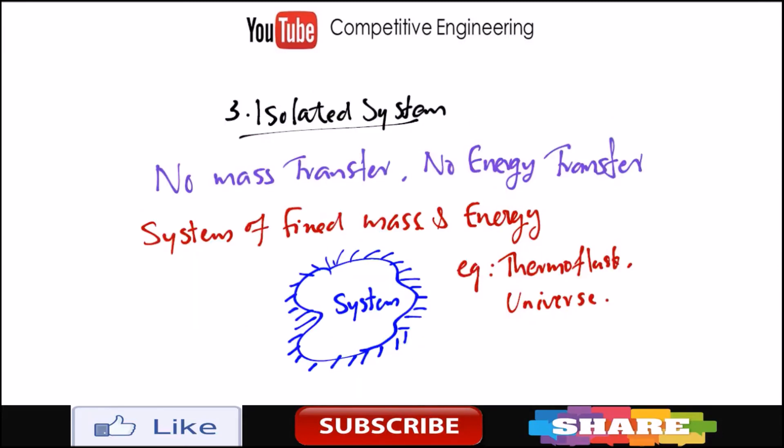The third type is an isolated system. There is no mass transfer and no energy transfer — it is a system of fixed mass and energy. There is no truly perfect isolated system, but we take a thermoflask as an example. A thermoflask is used to maintain the temperature of hot water; it is well insulated so ideally there is no heat transfer and the liquid content inside is constant — so it is treated as an isolated system. Practically, we cannot make a thermoflask with zero heat transfer. Another example given is the universe, though that is also not a perfect example, since we assume there is nothing outside the universe.